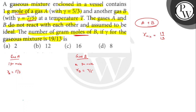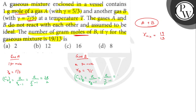Gamma is given, so we can calculate Cv. Cv of A equals R divided by (gamma of A minus 1), which is R divided by (5/3 minus 1), giving us 3R/2. Similarly, Cv of B equals R divided by (gamma B minus 1), that is R divided by (7/5 minus 1), giving 5R/2.